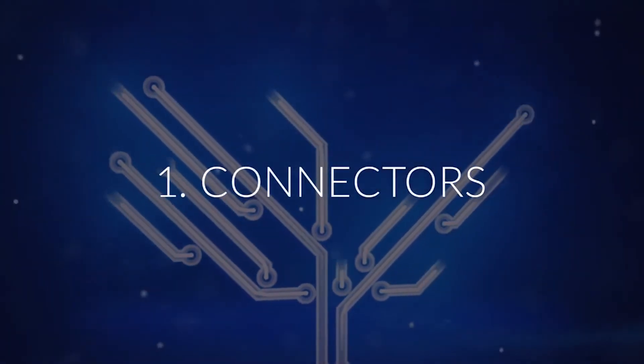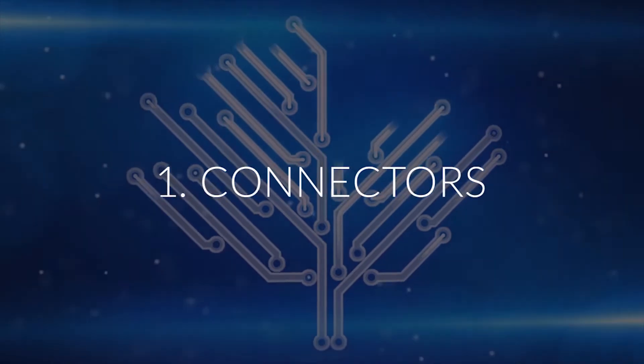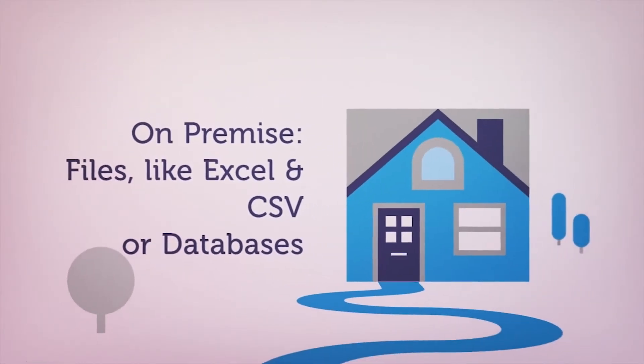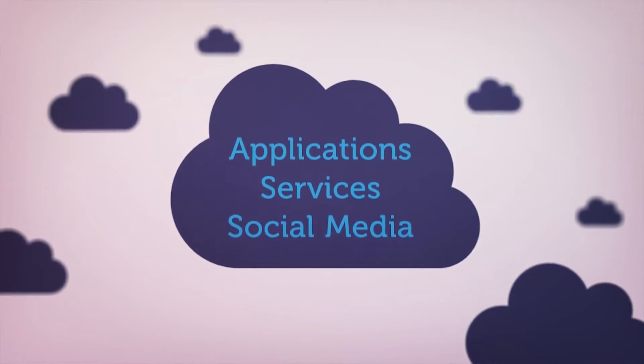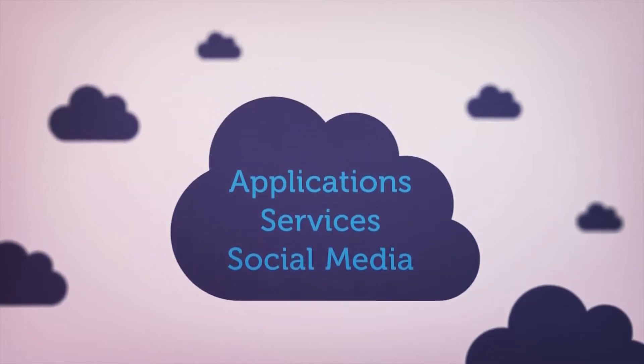Let's jump into the video and check out the six major differentiators of BI solutions. Connectors are essentially the different data types that the tool is able to work with. They're a bit like plugins built into the application that allow it to access the data sources wherever they may be, which will either be on-premise in things like Excel, CSV, or on-premise databases, or in the cloud in web services and applications, social media, that kind of thing.